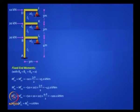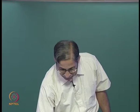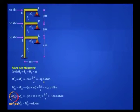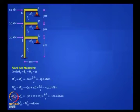The fixed end moments will be 10 × 3/2 — anticlockwise, because the chord rotation is clockwise. So minus 10 × 3/2 = minus 15. That does not take any time. For the next floor, the shear in that column will be 10 + 20 = 30 kilo Newton — it is not just 20, because that is the story shear. The moment is (10 + 20) × 3/2 with a minus sign. And for AB, it is the total base shear: (10 + 20 + 20) × 4/2 with a minus sign.